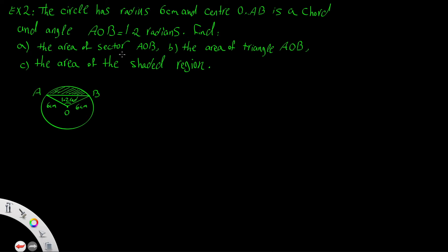Find: part (a) the area of sector AOB, part (b) the area of triangle AOB, and part (c) the area of the shaded region. For part (a), we find the area of sector AOB.